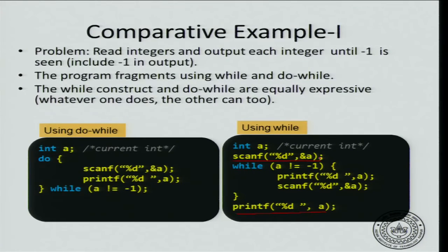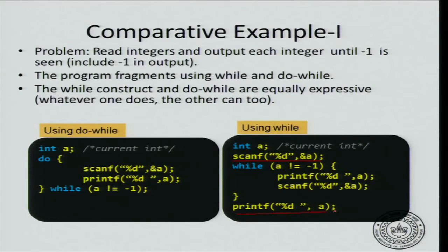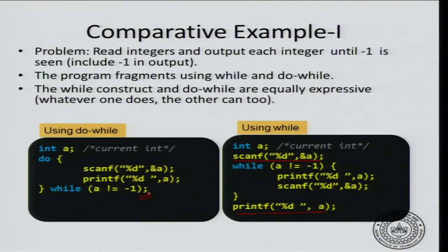This problem can be elegantly solved using the do-while loop. Initially you declare a variable, then scan the variable and print it. Either the number is minus 1 or it is not — in any case we need to print it. So go ahead and print it, then test whether the number was minus 1. If it is minus 1 you are done and exit. If not, go back, scan the next number, and print it. The do-while program is shorter. Please be careful about the syntactic difference — notice the semicolon at the end, which causes a lot of confusion when you compile. It is easy to miss.